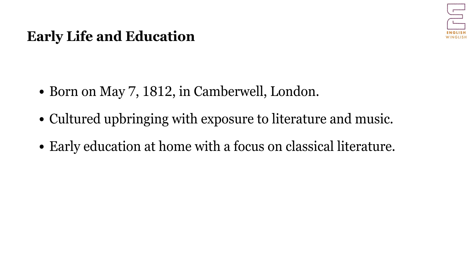Robert Browning was born on May 7, 1812 in Camberwell, a suburb of London. He came from a cultured and middle-class family. His father, Robert Browning Sr., was a bank clerk, and his mother, Sarah Anna Wiedemann Browning, was a talented pianist. Browning's early exposure to literature and music greatly influenced his artistic sensibilities. He received a classical education at home, which exposed him to the works of Shakespeare, Milton, and the Romantic poets. He was a precocious child and began writing poems at an early age, and his love for literature and poetry continued to grow as he matured.